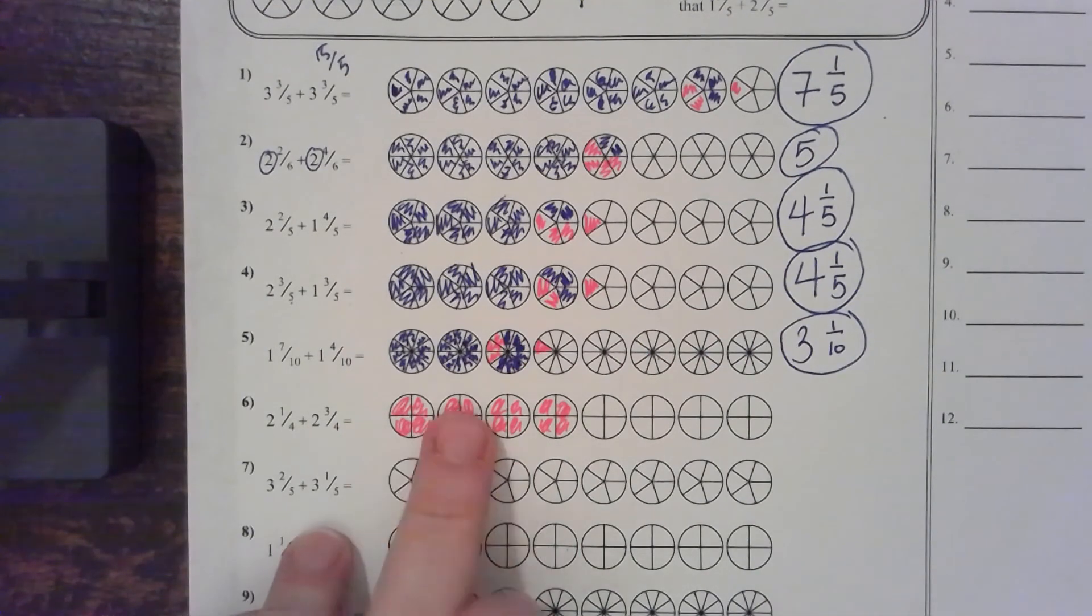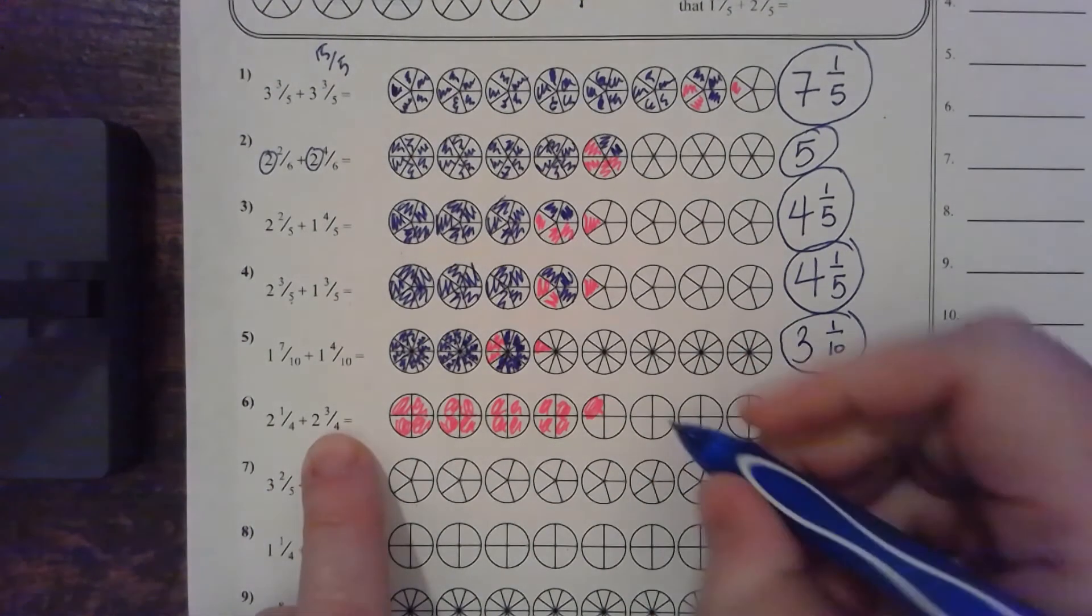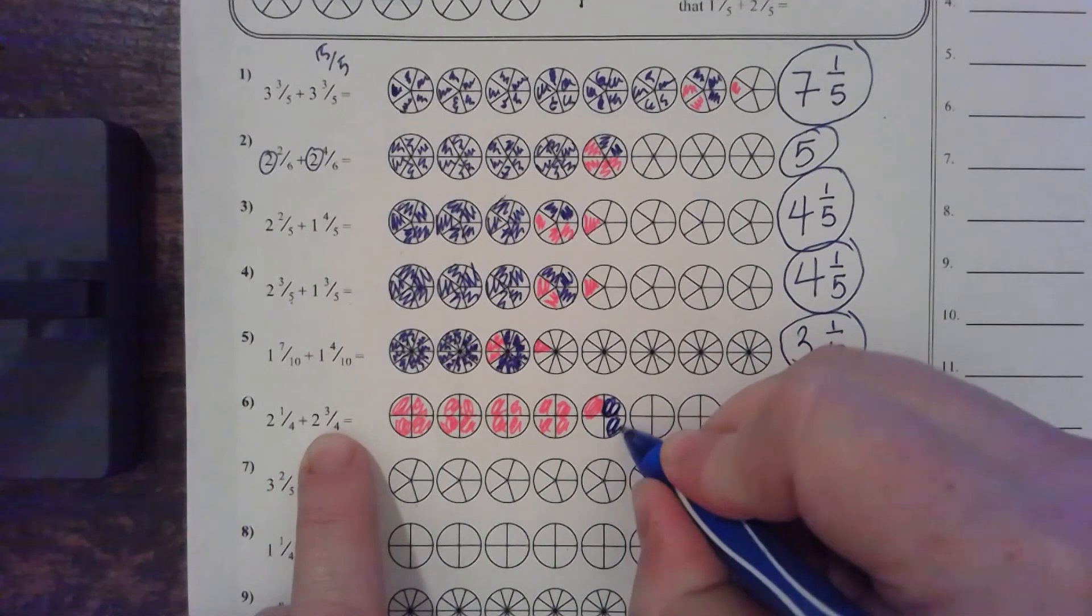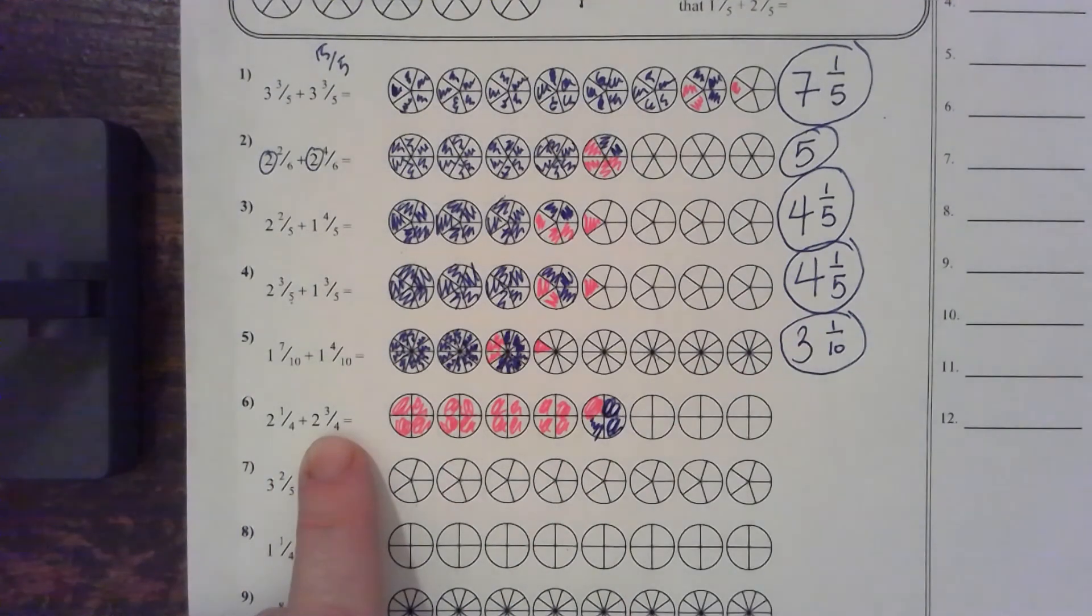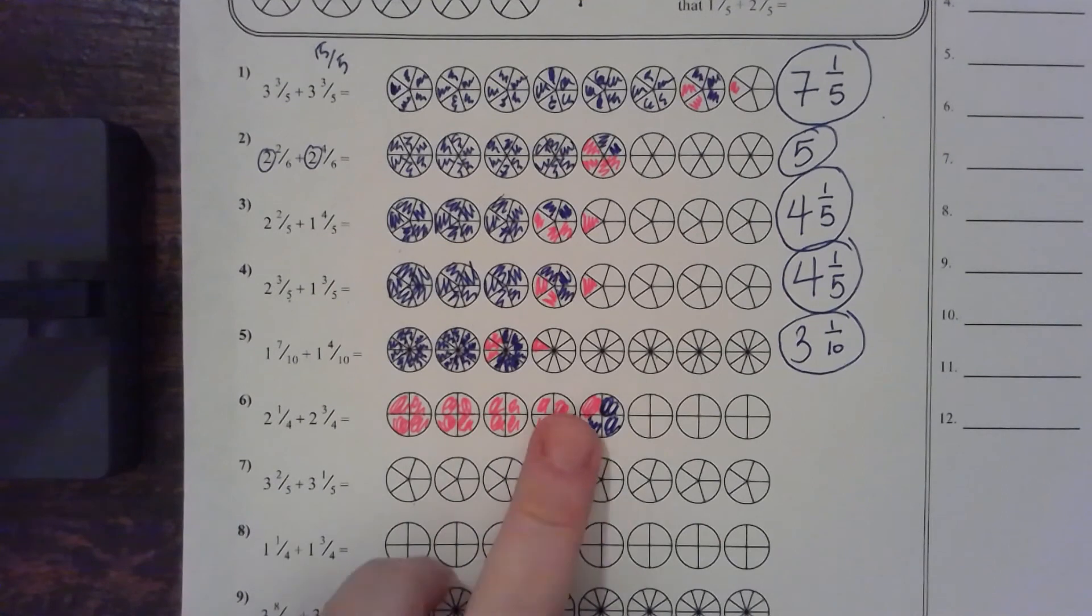All right. So, I have one, two, three, four. That's exactly what we've got. Two plus two is four. And now, one-fourths plus three-fourths. All right. Now, my answer is one, two, three, four, five.